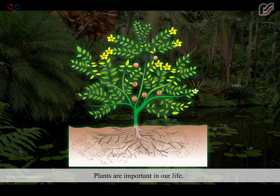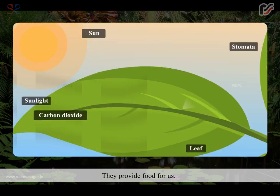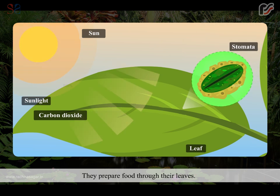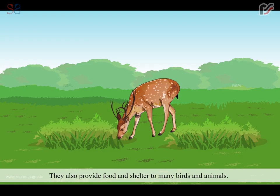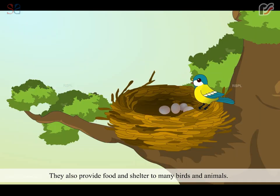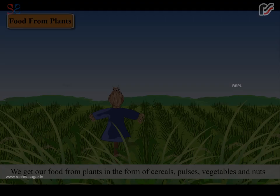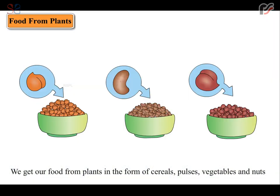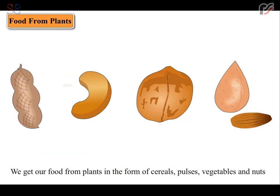Plants are important in our life. They provide food for us. They prepare food through their leaves. They also provide food and shelter to many birds and animals. We get our food from plants in the form of cereals, pulses, vegetables and nuts.